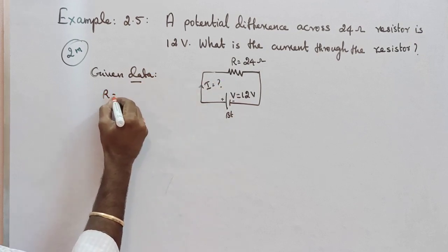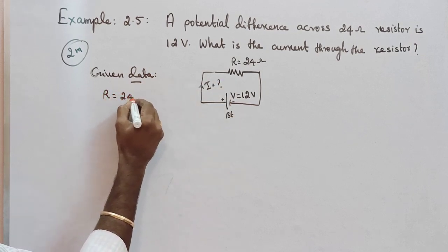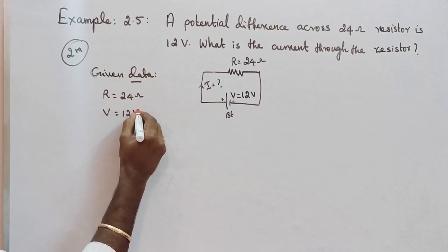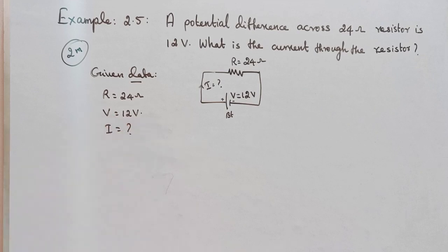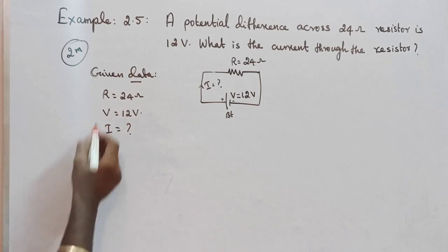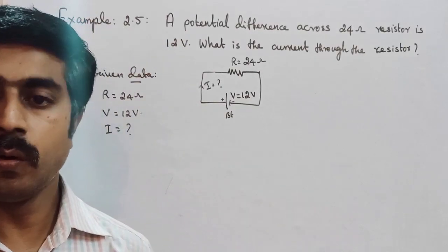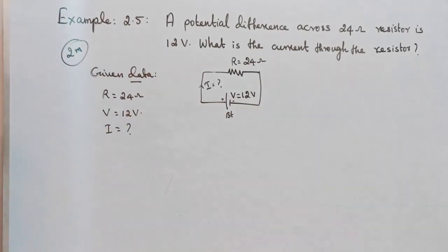So first, given data: resistance R is equal to 24 ohm. The next is potential difference V is equal to 12 volt. And electric current I is equal to question mark. So we have to get the formula. Ohms law, V is equal to IR.